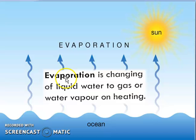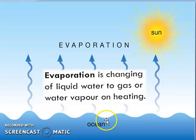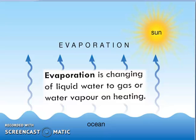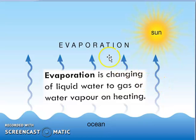What is evaporation? Evaporation is the changing of liquid water to gas, or water vapor, on heating. When water gets heated, the liquid water converts into gas, and this changing of water from liquid to gas is called evaporation. Repeat with me: changing of liquid water to gas or water vapor on heating is called evaporation.